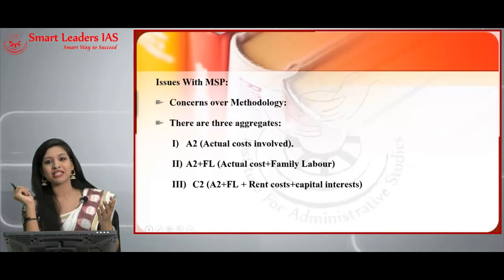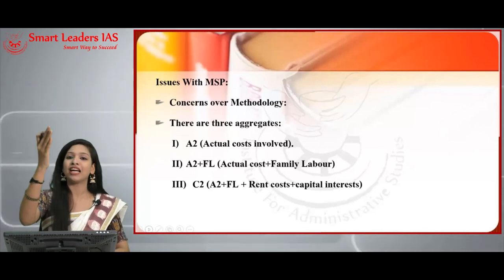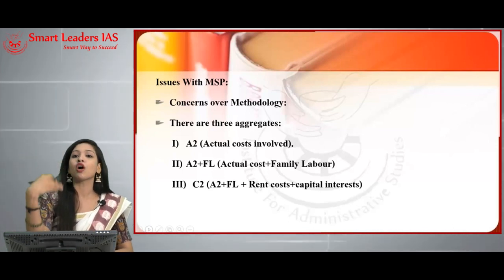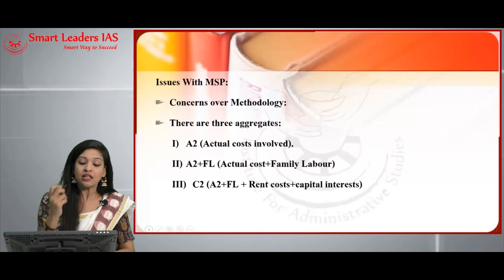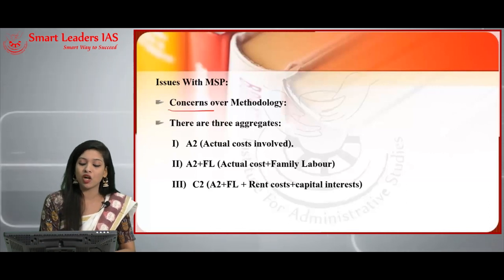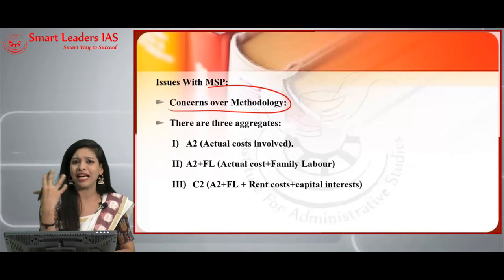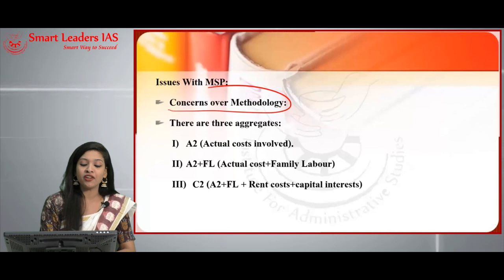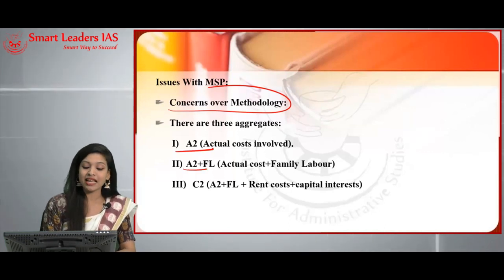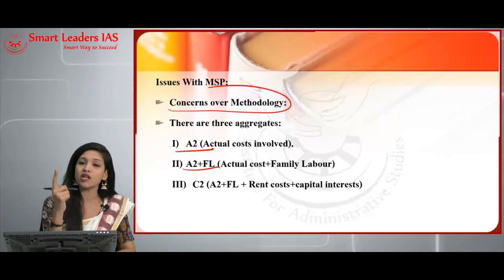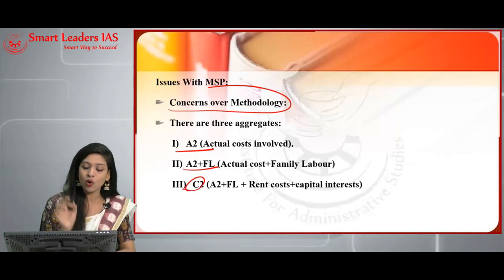Now we turn to the issues. Since this is a 'critically evaluate' question, we must discuss the challenges concerned with MSP. The first issue is the concern over the methodology used to calculate it. Economists have developed three aggregates: A2 (actual cost), A2+FL (actual cost plus family labor), and C2 (A2+FL plus rent plus capital interest). C2 is the most comprehensive and wider in scope.